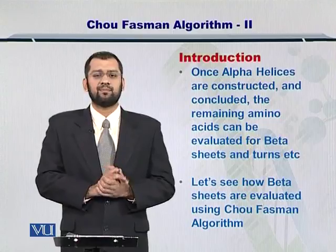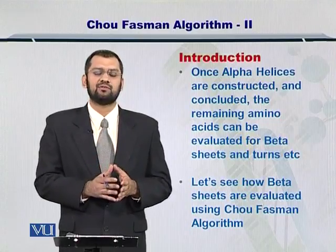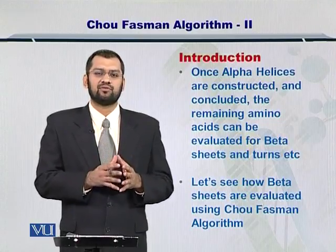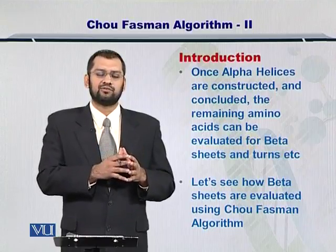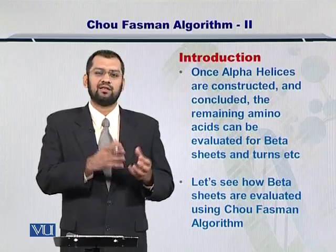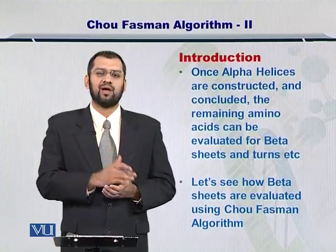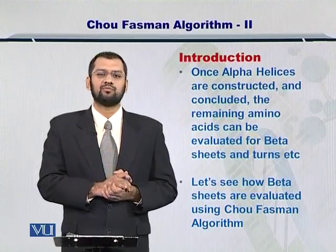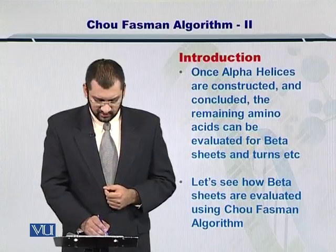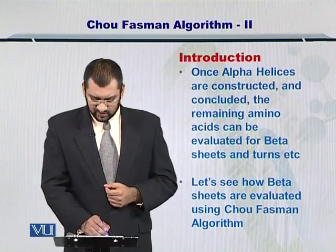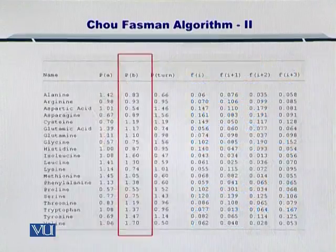The first step, as just mentioned, is that you finalize which alpha helices are present in the sequence, and then for the remaining portions of the sequence you evaluate them towards formation of beta sheets. Let's see how to start with beta sheet formation in the Chou-Fassman algorithm.